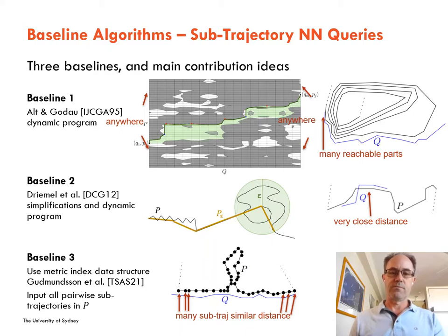Also, it can suffer in the case where many sub-trajectories are a similar distance to the query Q, as in this example here.